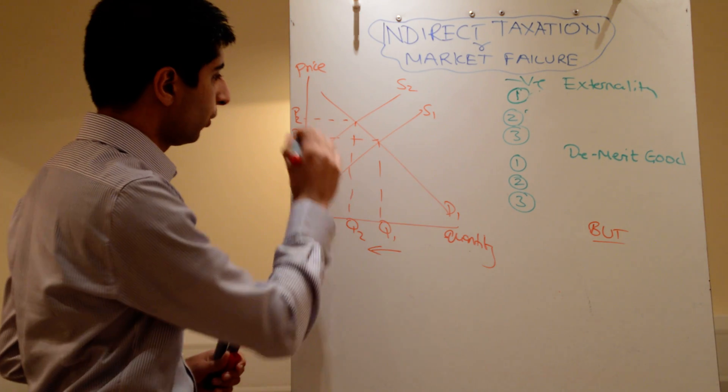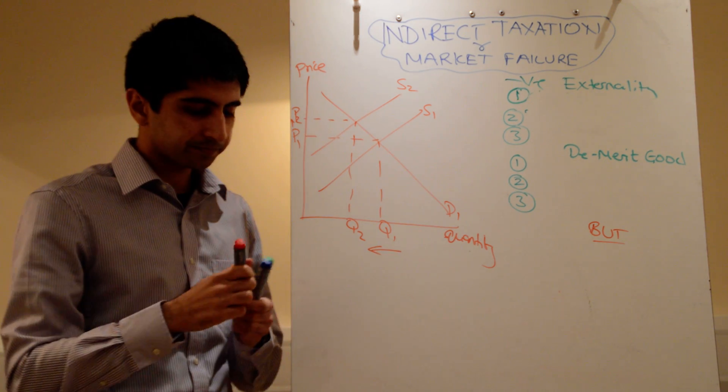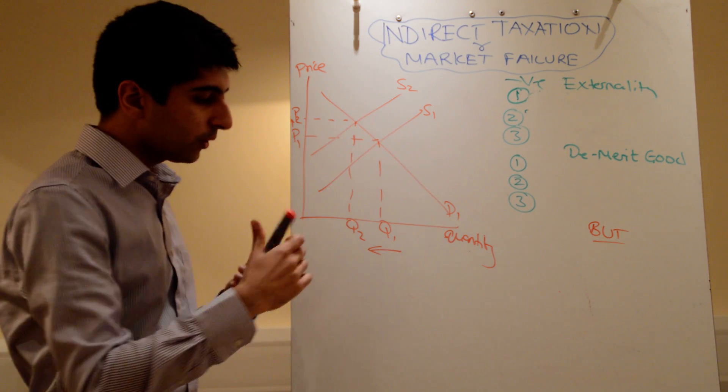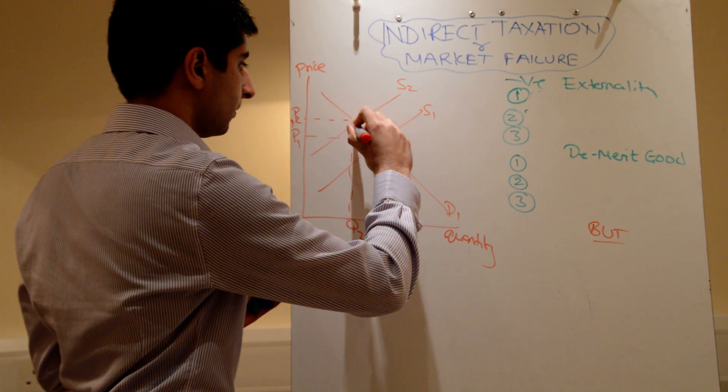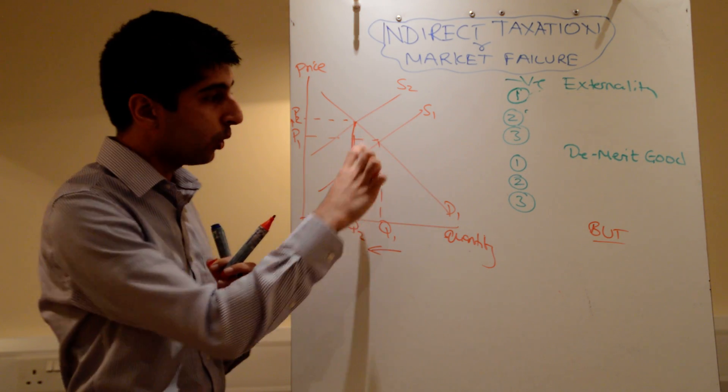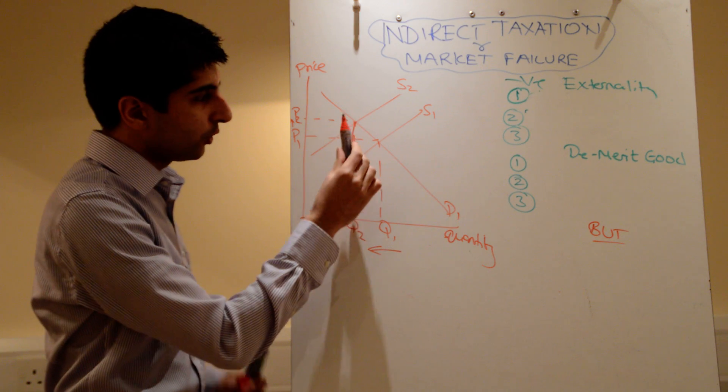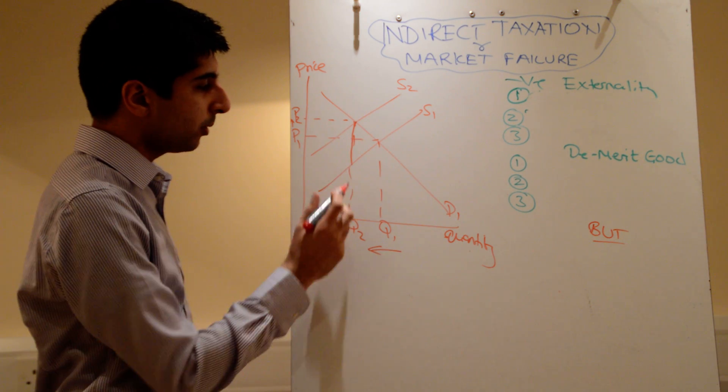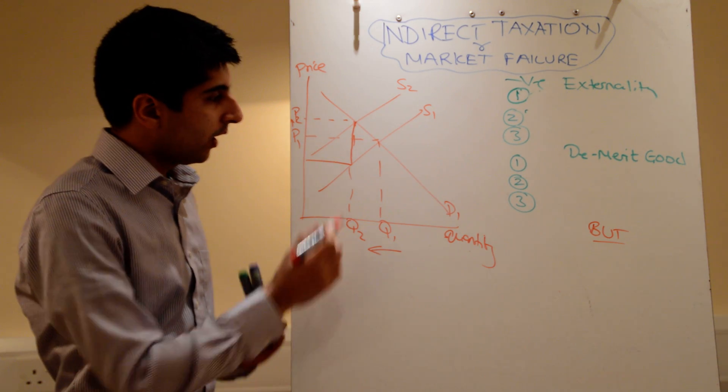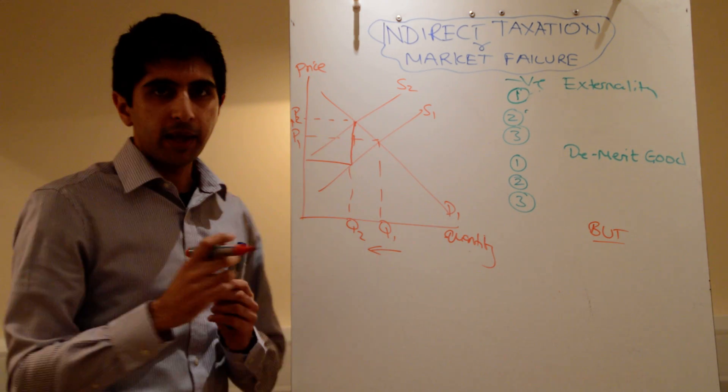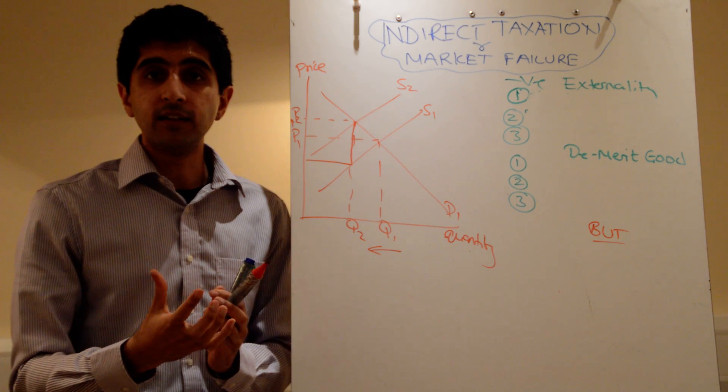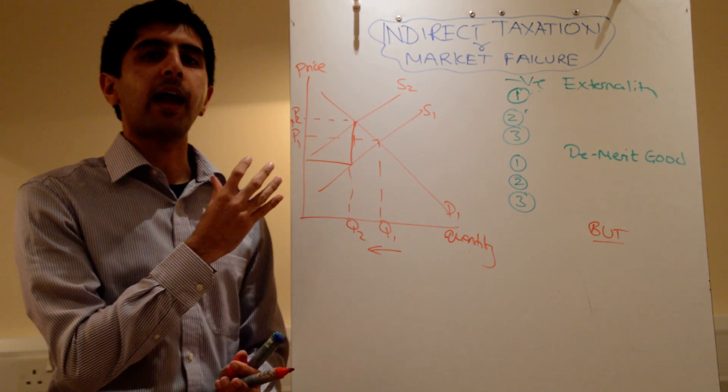Quantity falls, price increases. But we can actually work out a lot more. The vertical distance is the unit tax. So going from the new equilibrium vertically downwards to the old supply curve, that tells you what the tax was per unit. Multiply that by the number of units sold, which is Q2, and you get a box. That box represents the total revenue generated for the government by this tax.